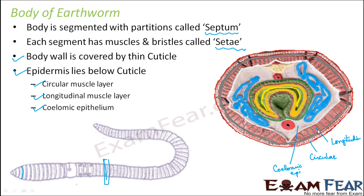Regarding the epithelium: since we have spoken about animal tissues, we know the purpose of epithelial tissue. The type of epithelium present here is columnar epithelium with secretory gland cells. Secretion is an important property of the epithelium present here. So the body wall of the earthworm is lined with columnar epithelium.